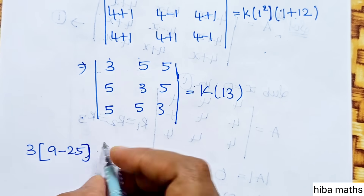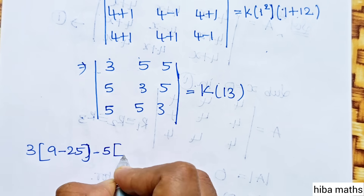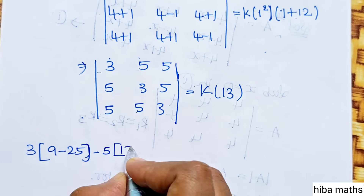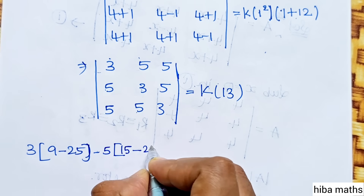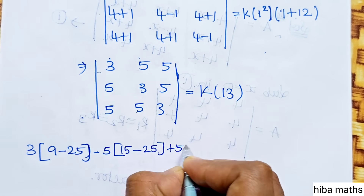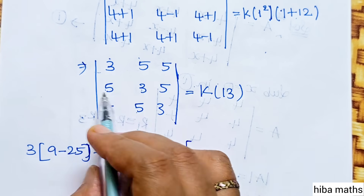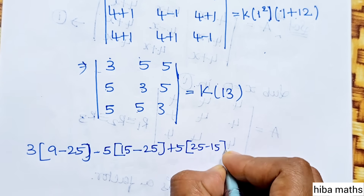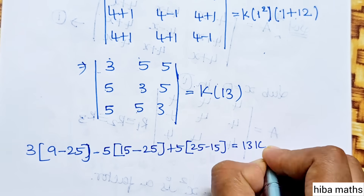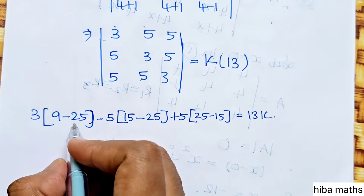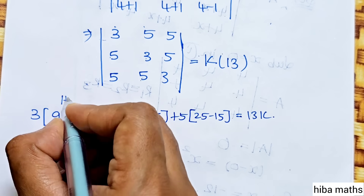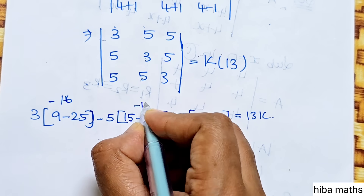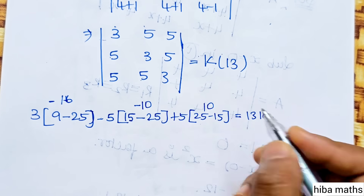Now the sign is minus. Minus 5 into first row second column: 5 times 3 is 15, minus 5 times 5 is 25. Plus 5 into first row last column: 5 times 5 is 25, minus 15. This equals 13 into k. Solving: 16 minus 16, minus 16, minus 10, plus 10.